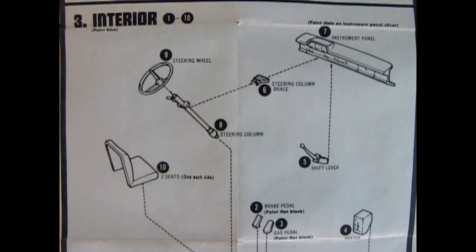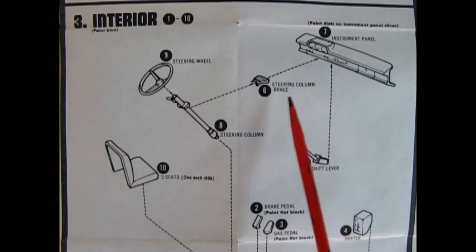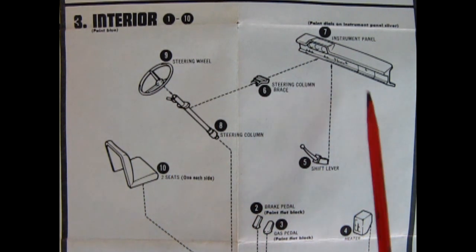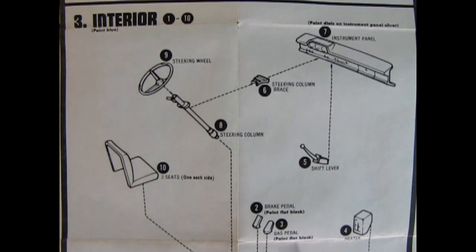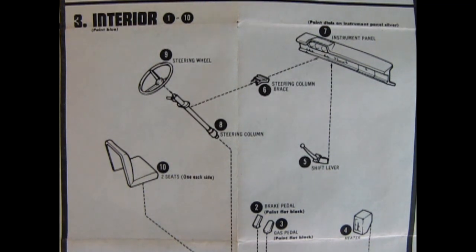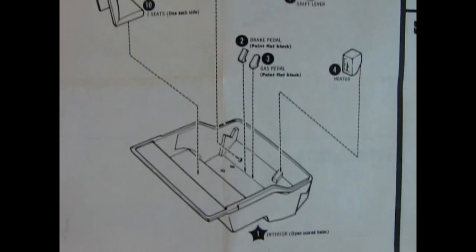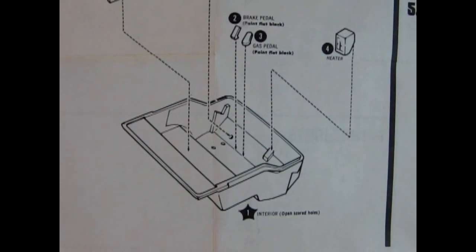Panel three shows our interior. So here we have our dashboard, our steering column bracket, the steering wheel, the steering column, two front seats, the shift lever, which glues up on the bottom of the dashboard, our brake pedals down here, and then our heater. And if I just slide this up a bit, there's our interior tub at the bottom.